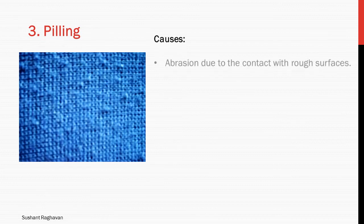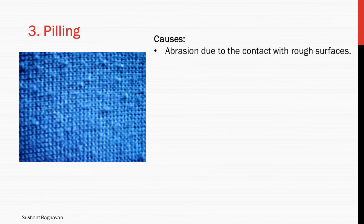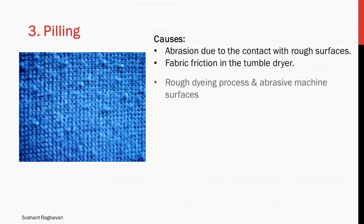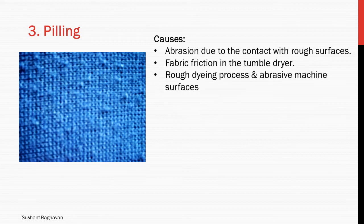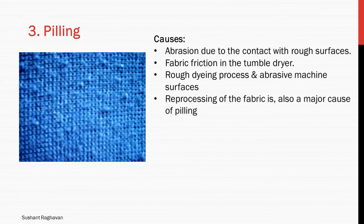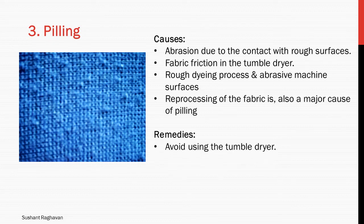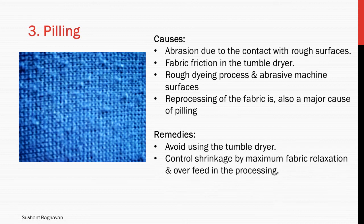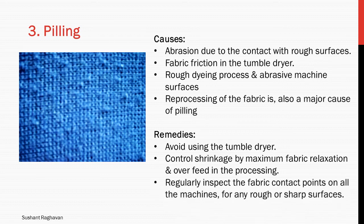Pilling. Causes: abrasion due to contact with rough surfaces, fabric friction in the tumble dryer, rough dyeing processes and abrasive machine surfaces, and reprocessing of the fabric is also a major cause of pilling. Remedies: avoid using the tumble dryer. Control shrinkage by maximum fabric relaxation and overfeeding in the processing. Regularly inspect the fabric contact points on all machines for any rough or sharp surfaces.